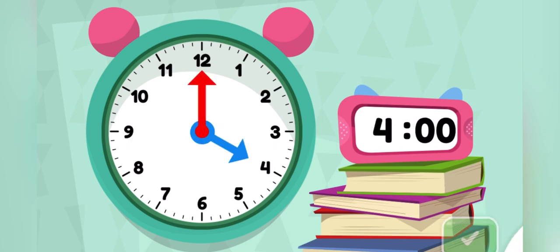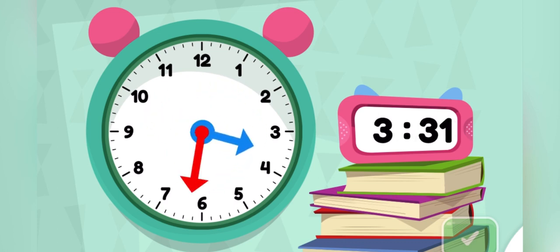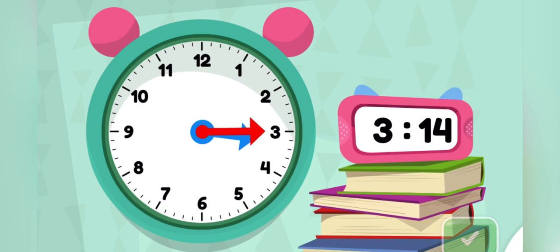Move the minute hand on the round clock to show 3.15. You did it! You made the clock show 3.15.